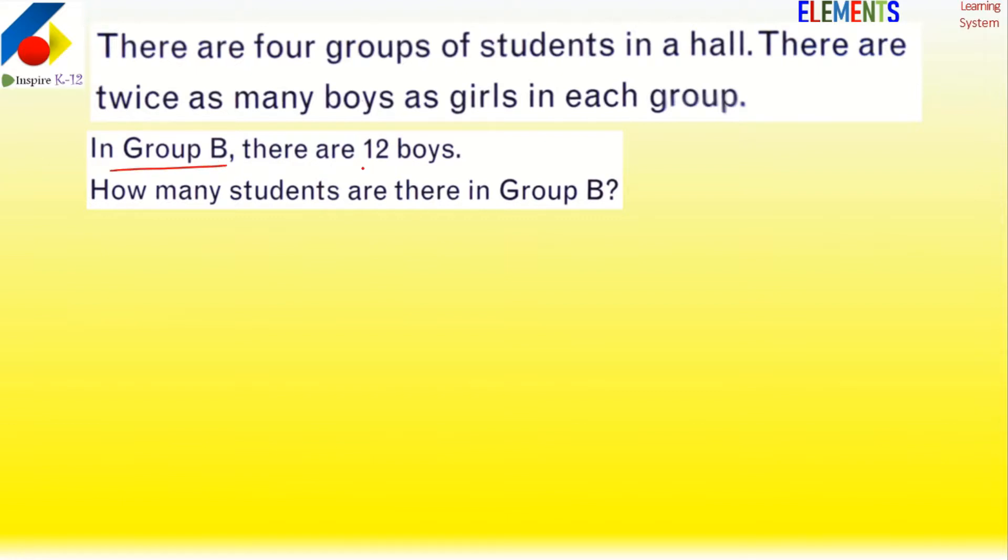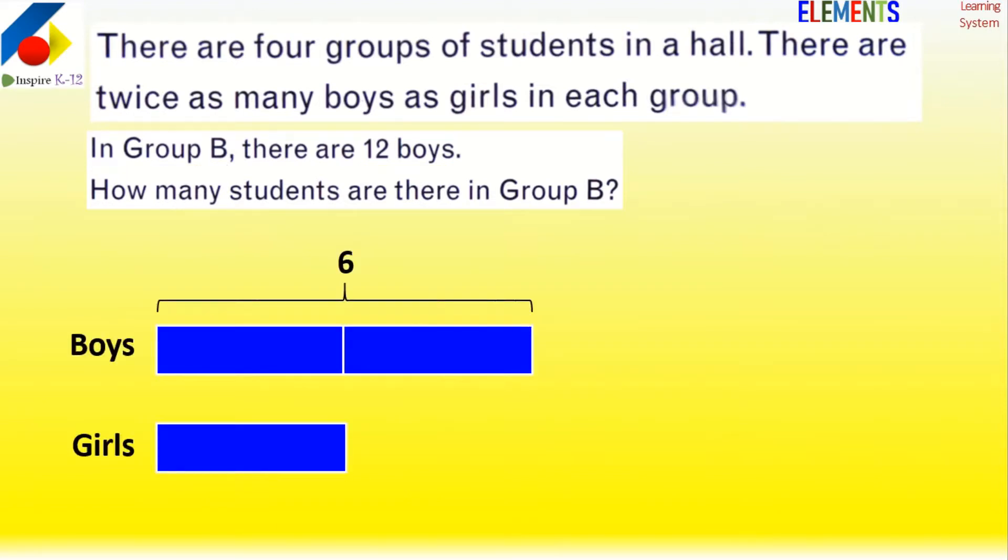Group B - there are 12 boys. Total students, right? 12 boys, so girls are half. So we can say girls are half.